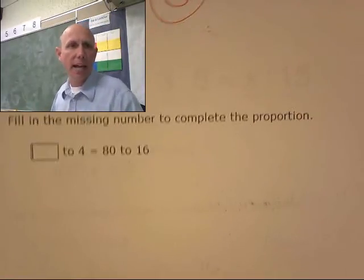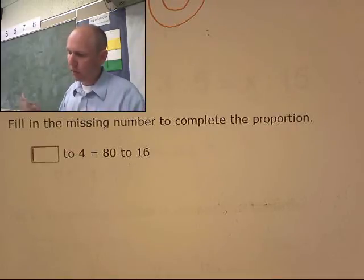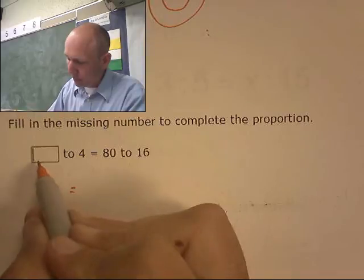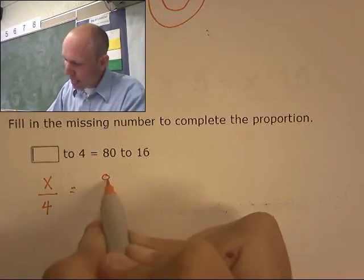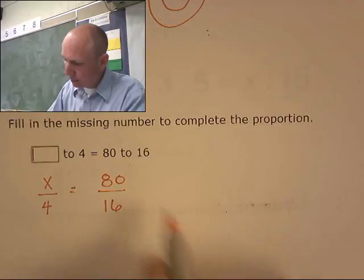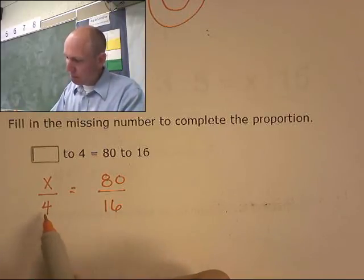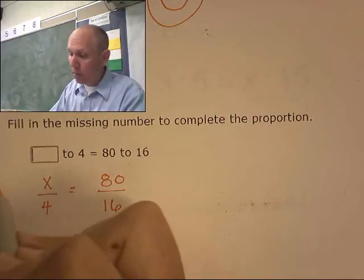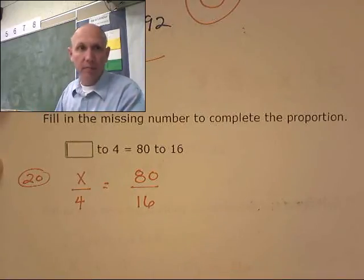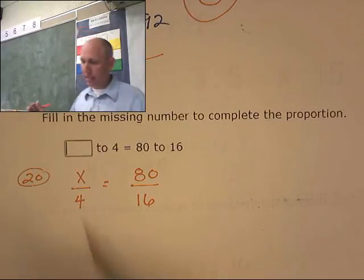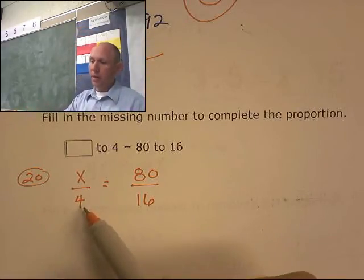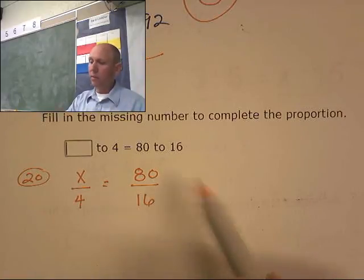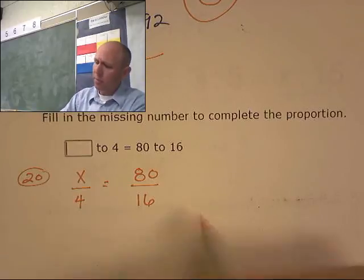Okay. And one more. So I have x over 4 equals 80 over 16. Hmm. So 4 times 4 is 16. 4 times 20 would be 80. So I say it's a 20. I'm going with a 20 on this. That's my guess. 20 divided by 4 is 5. 80 divided by 16 is 5. It sure feels like it's good.